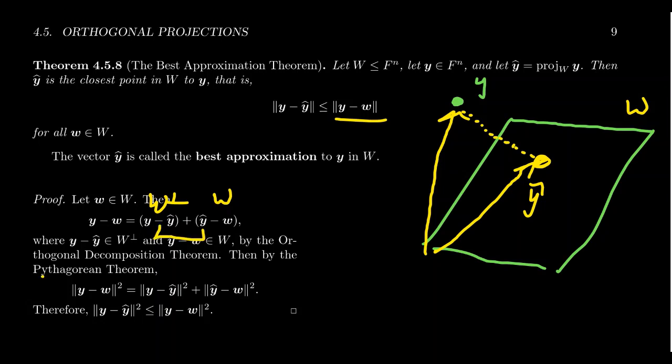This is relevant because of the Pythagorean theorem. If we have a sum like this, if we have this orthogonal decomposition, we know that if we take the norm of y minus w squared, this is going to equal the norm of y minus y-hat squared plus the norm of y-hat minus w squared.